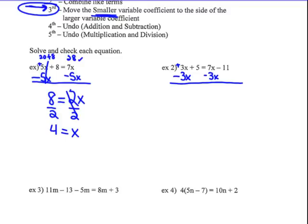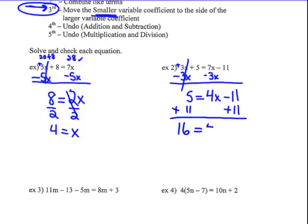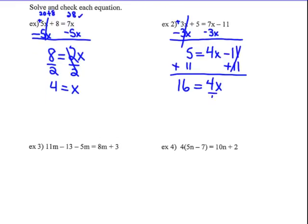I'm going to subtract 3x from both sides and combine them just like they were numbers. Positive 3x and negative 3x cancel, and I get 5 equals 7x take away 3x, which is 4x. Bring down the negative 11. Now you have a two-step equation — we know how to solve these. Undo the adding first. So I have 16 equals 4x. Divide by 4, divide by 4, and you get 4 equals x. Putting that back in to check: 3 times 4 is 12, plus 5 is 17. On the right side, 7 times 4 is 28 take away 11, that equals 17. Yippee — correct answer.